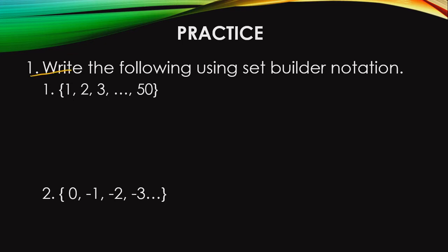So now we're going to write the following using set builder notation. For number 1, we have the elements 1, 2, 3 — the set of elements 1, 2, 3 until 50.